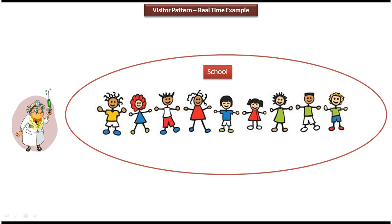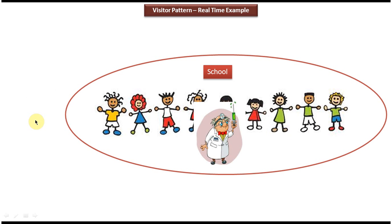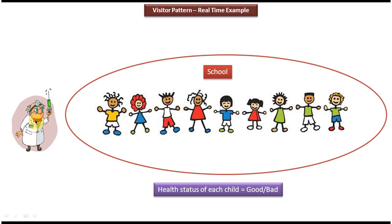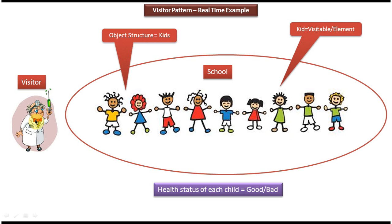Then what this child specialist will do is he will visit the school and he will check the health status of each and every child, and he will give the report to the school management. So here the doctor is nothing but a visitor, and the object structure is the kids collection of kids. And each kid is a visitable or element object. So this is a best example of visitor design pattern.